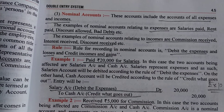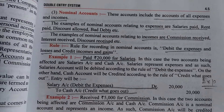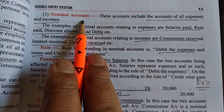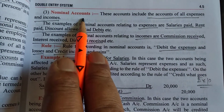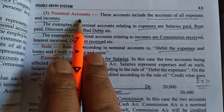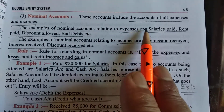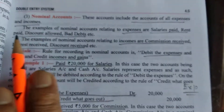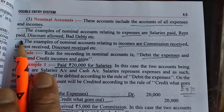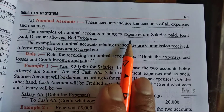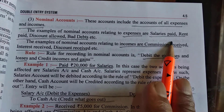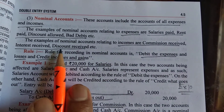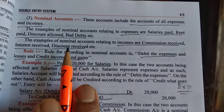My dear friends, the last is nominal accounts. In nominal accounts, these accounts include all the expenses or all the incomes. Expenses means to say like salary you are paying to your workers, rent paid, discount allowed, electricity bill, telephone bill, etc.